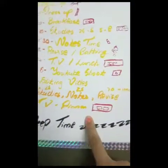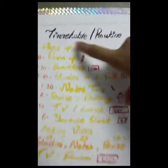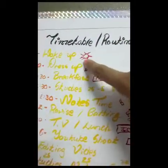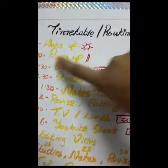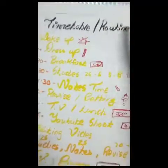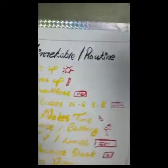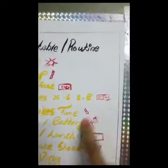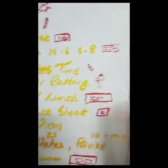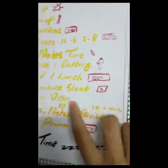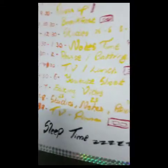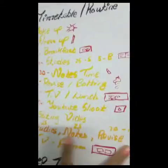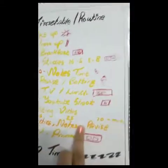In my timetable I've drawn little icons: something for makeup and dressing, hands for breakfast, a book for study, and a pencil with a shadow for something else. For lunch, YouTube, and editing I've drawn some icons too, though I wasn't sure how to draw those.